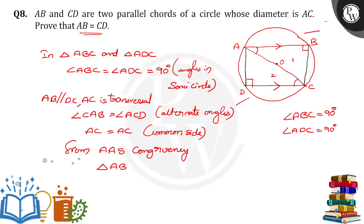Triangle ABC is congruent to triangle ADC. When these two triangles are congruent, from CPCT, from corresponding parts of congruent triangles, I can say that AB is equal to DC. Hence proved. Thank you.